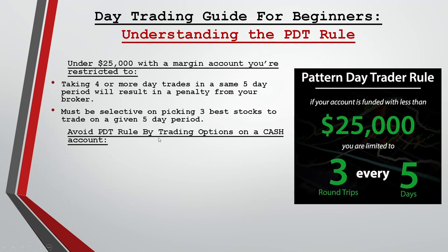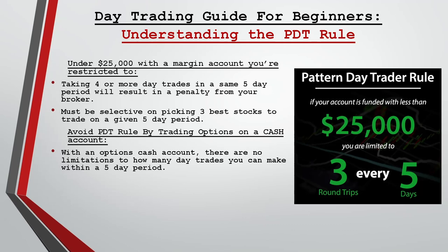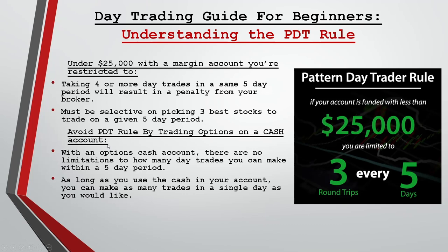There's a way to avoid the PDT rule: use a cash account. What I do is trade options on a cash account. With an options cash account there are no limitations to how many day trades you can make within a five-day period — as long as you use the cash in your account you can make as many trades in a single day as you like. For example, with a $1,000 account I can make ten $100 trades in a single day without getting flagged.